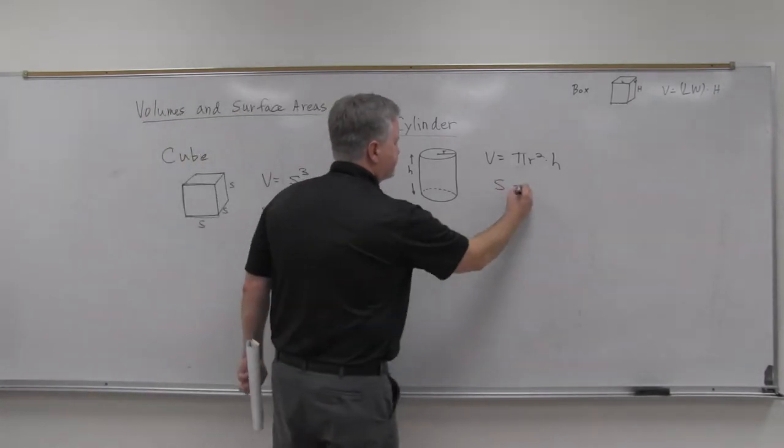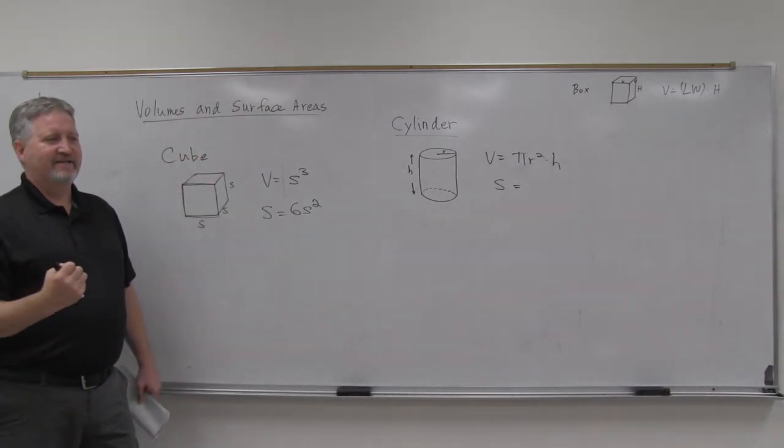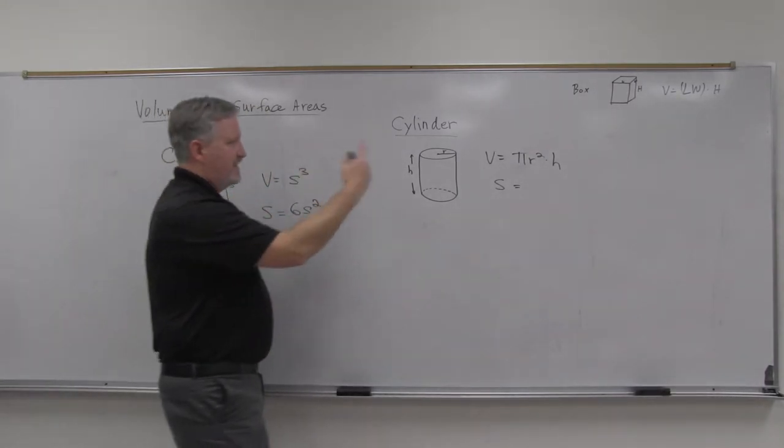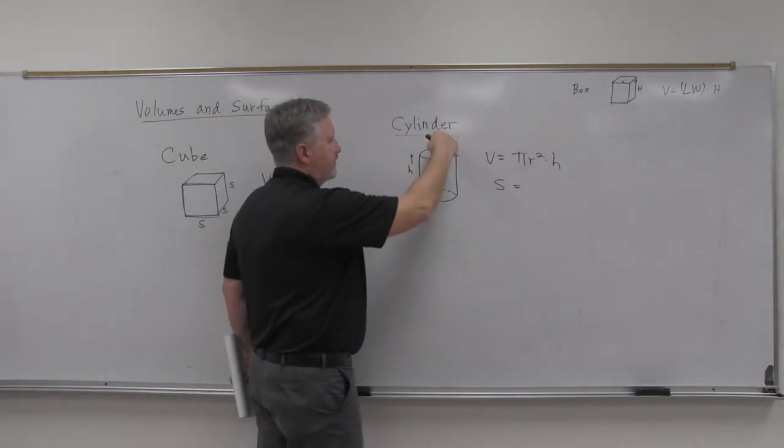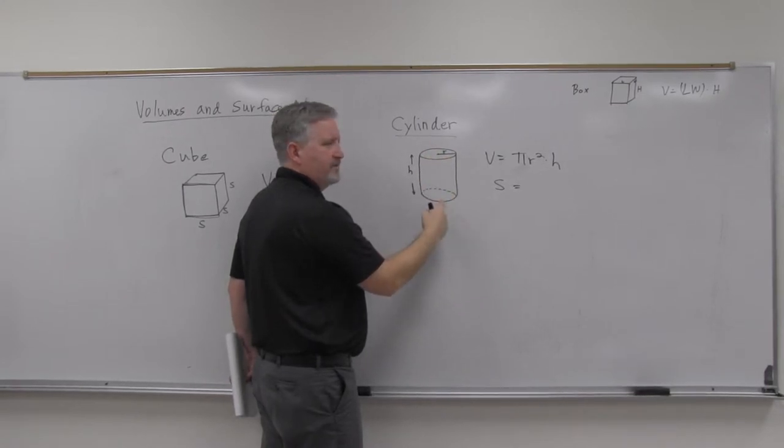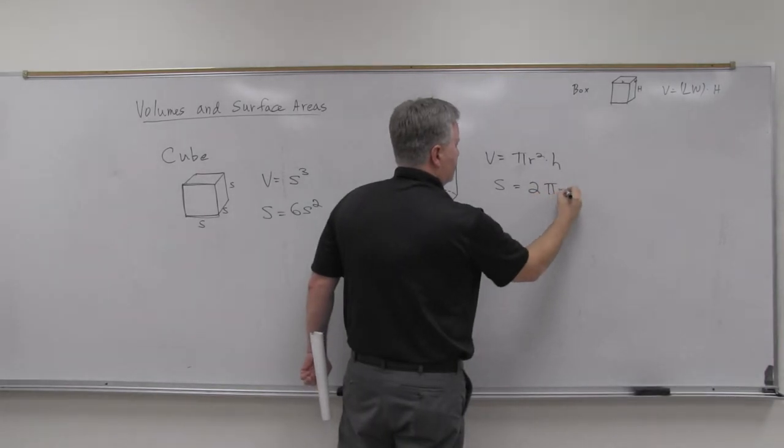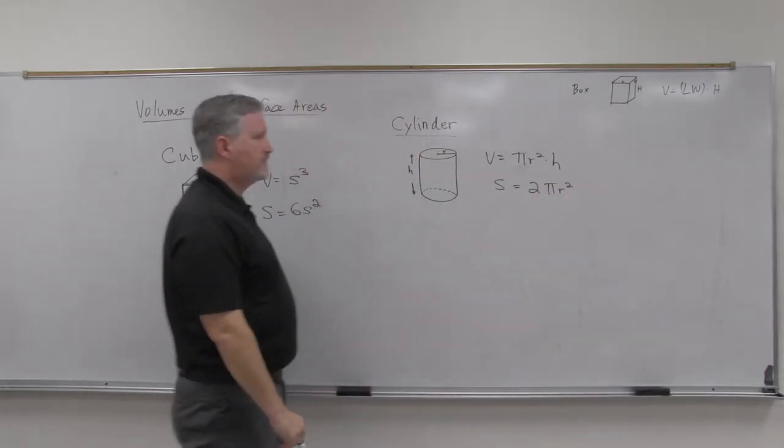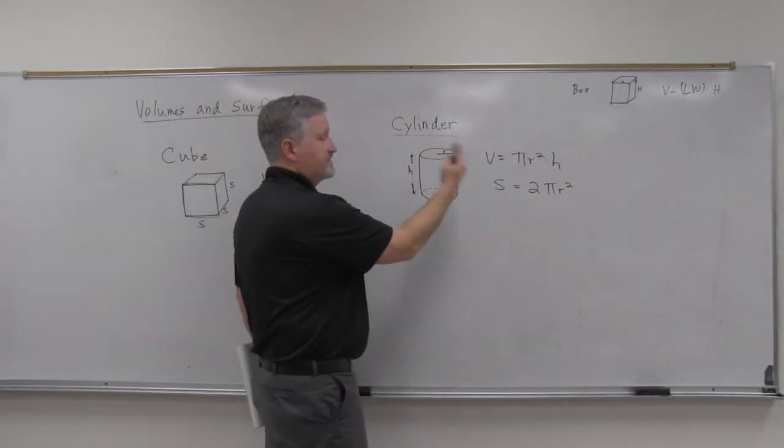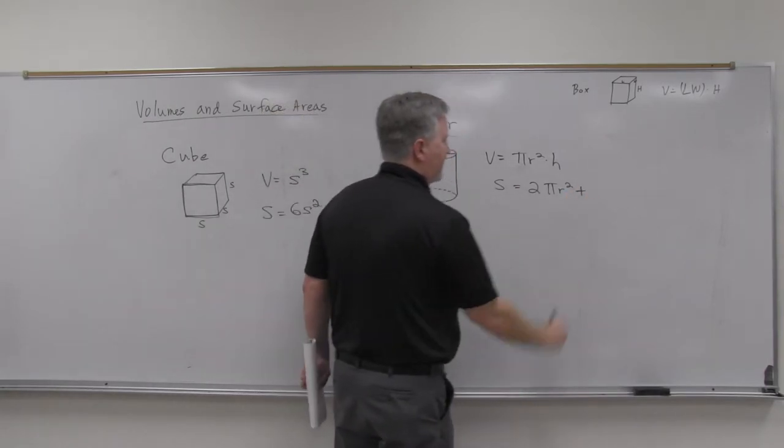Surface area, part of the surface area is pretty easy. Surface area, you're just adding up the surfaces. So, the top and bottom, again, they're circles, so I've got a pi r squared on the top, I've got a pi r squared on the bottom, so I've got two pi r squareds, but that leaves the rest of the cylinder, the middle part, so I've got to add that in.